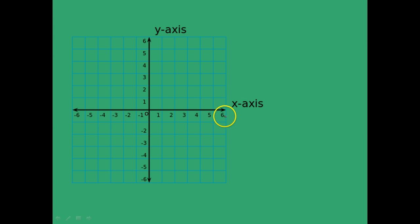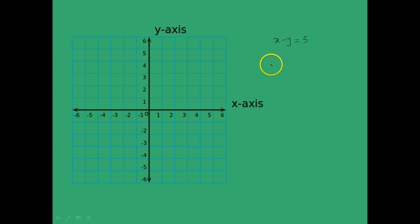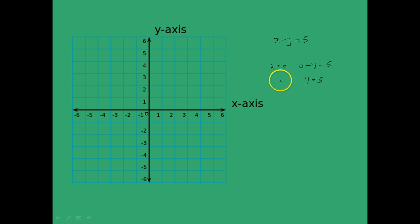Next we will look at the geometrical representation of a linear equation in two variables. Consider the equation x minus y is equal to 5. If we put x equal to 0, we get minus y equal to 5, and multiplying both sides by minus 1, y equal to minus 5. So x equal to 0 and y equal to minus 5 is one solution. If we put y equal to 0, we get x equal to 5, so x equal to 5 and y equal to 0 is another solution.